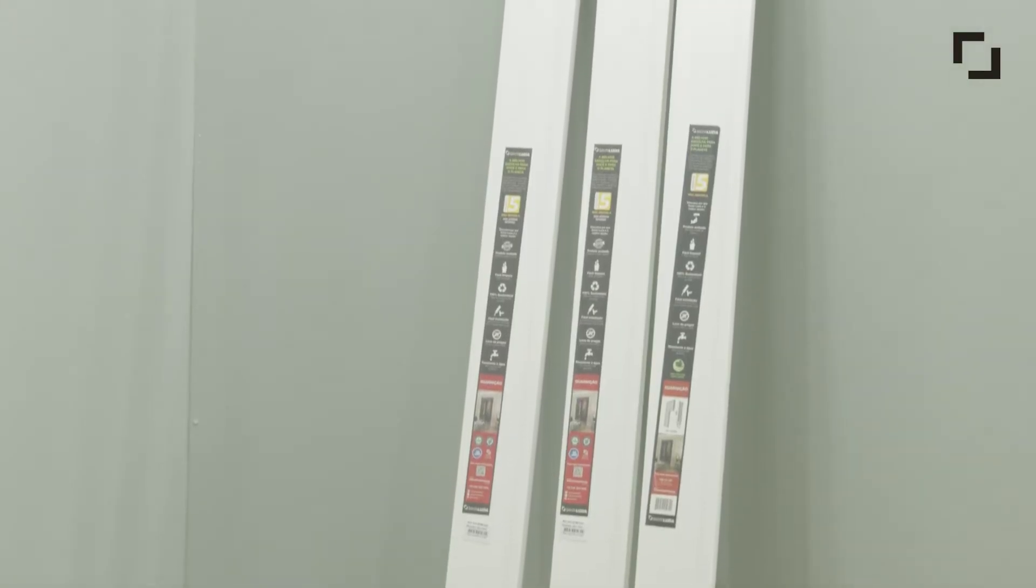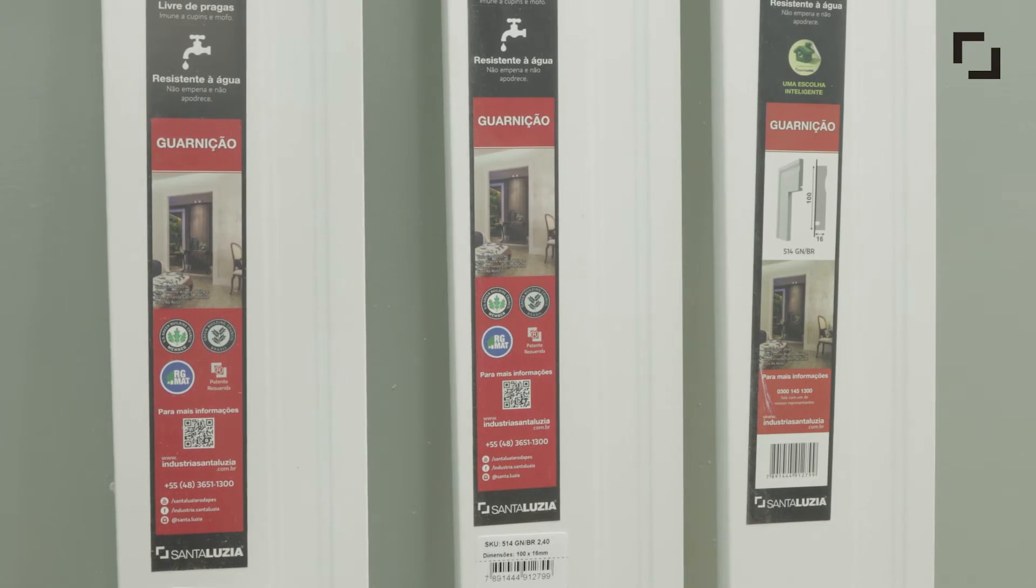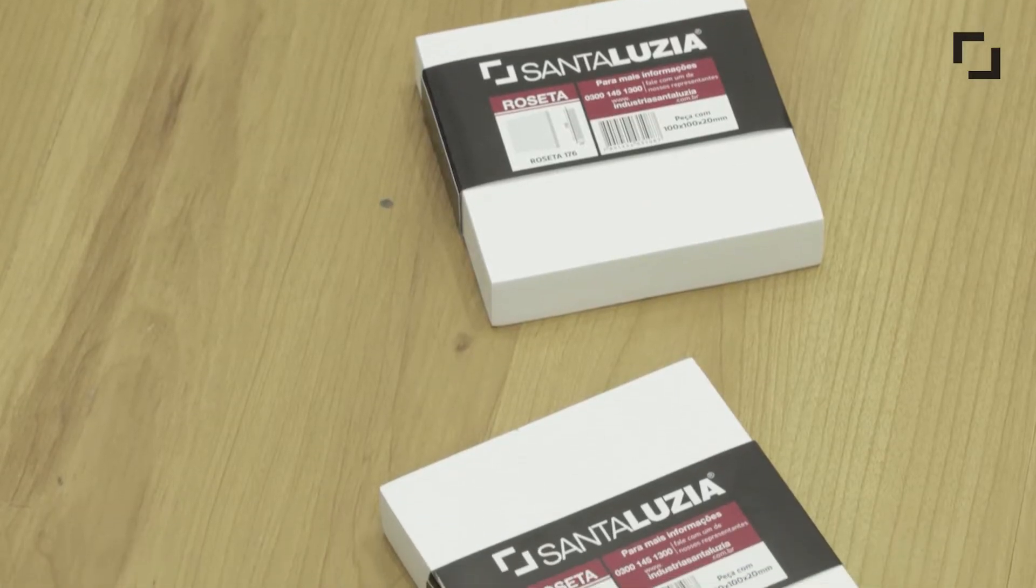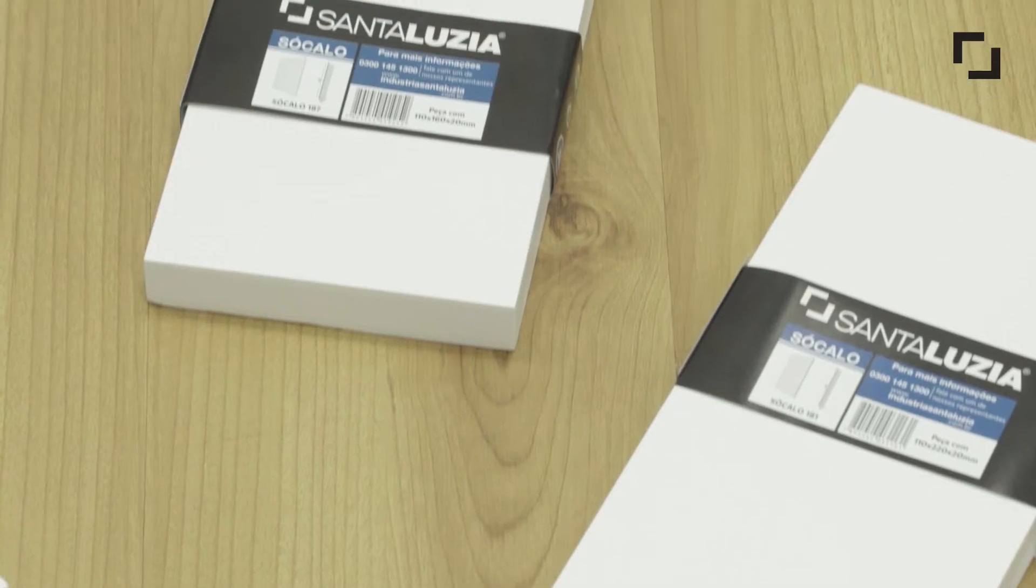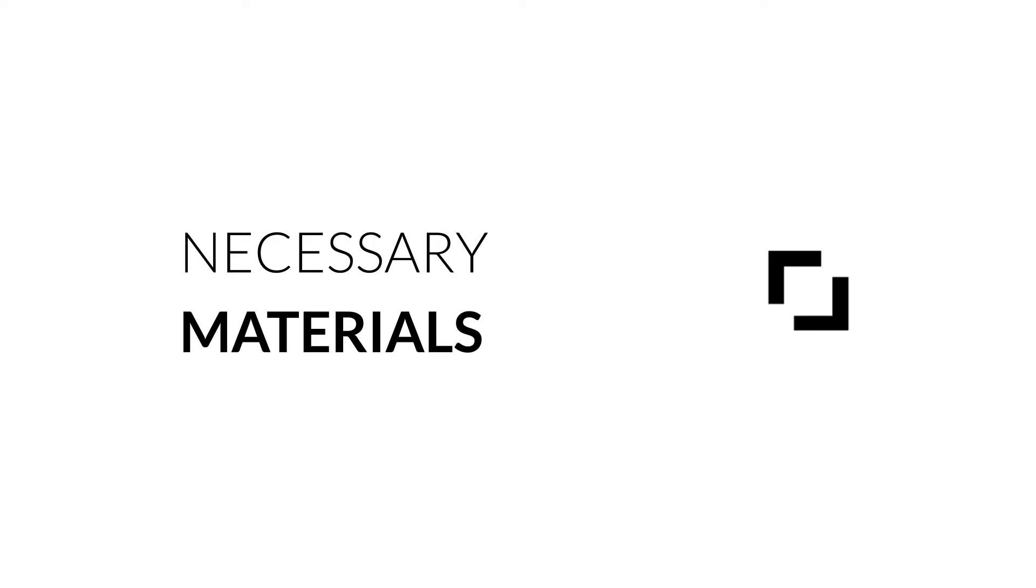The encounter between decorative profiles such as baseboards and casings can receive complements to look even better. Santa Lucia plinth blocks and rosettes are used to give a more elegant finish to the environment. They're easy to apply, meaning you can install them yourself.